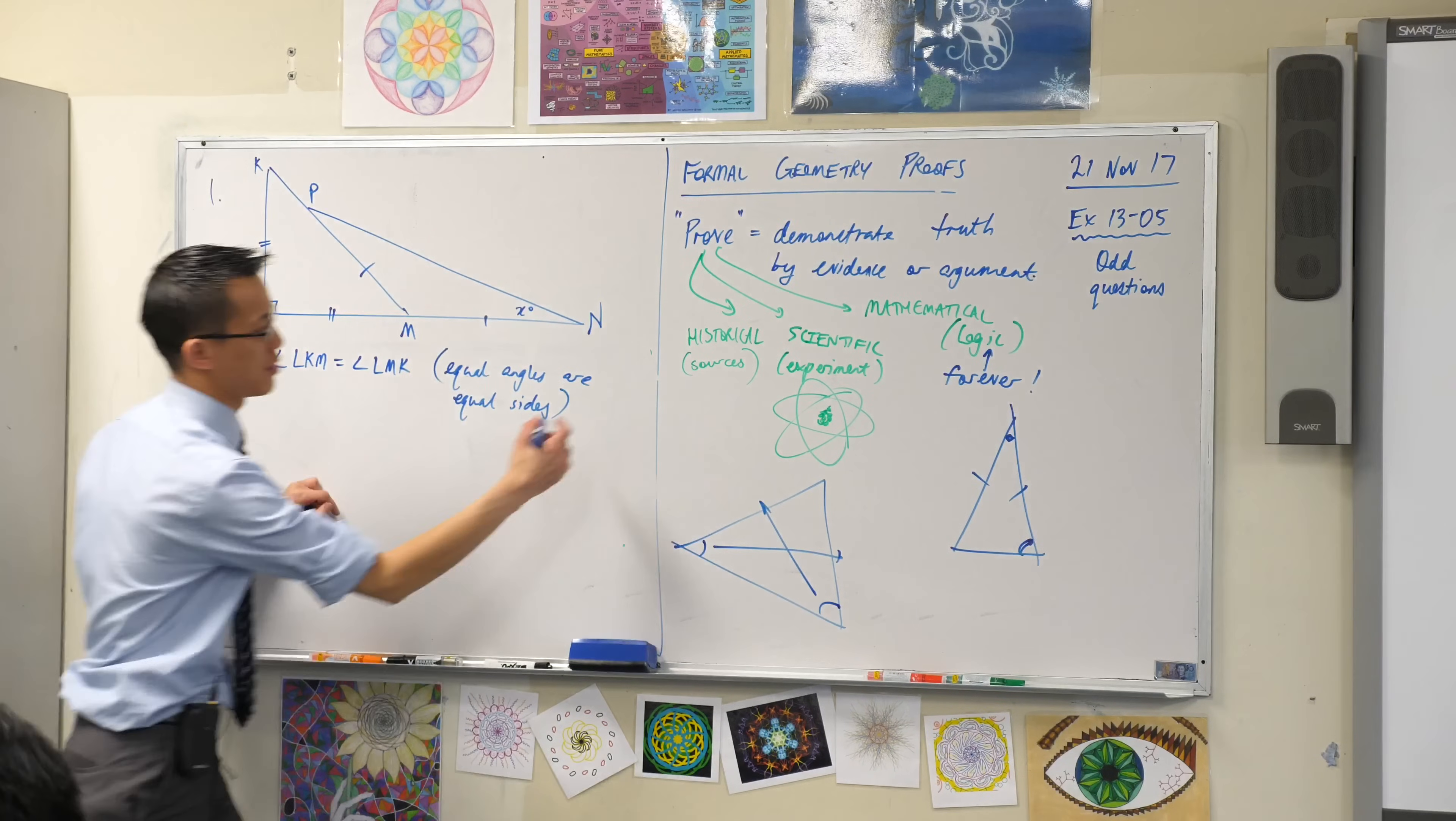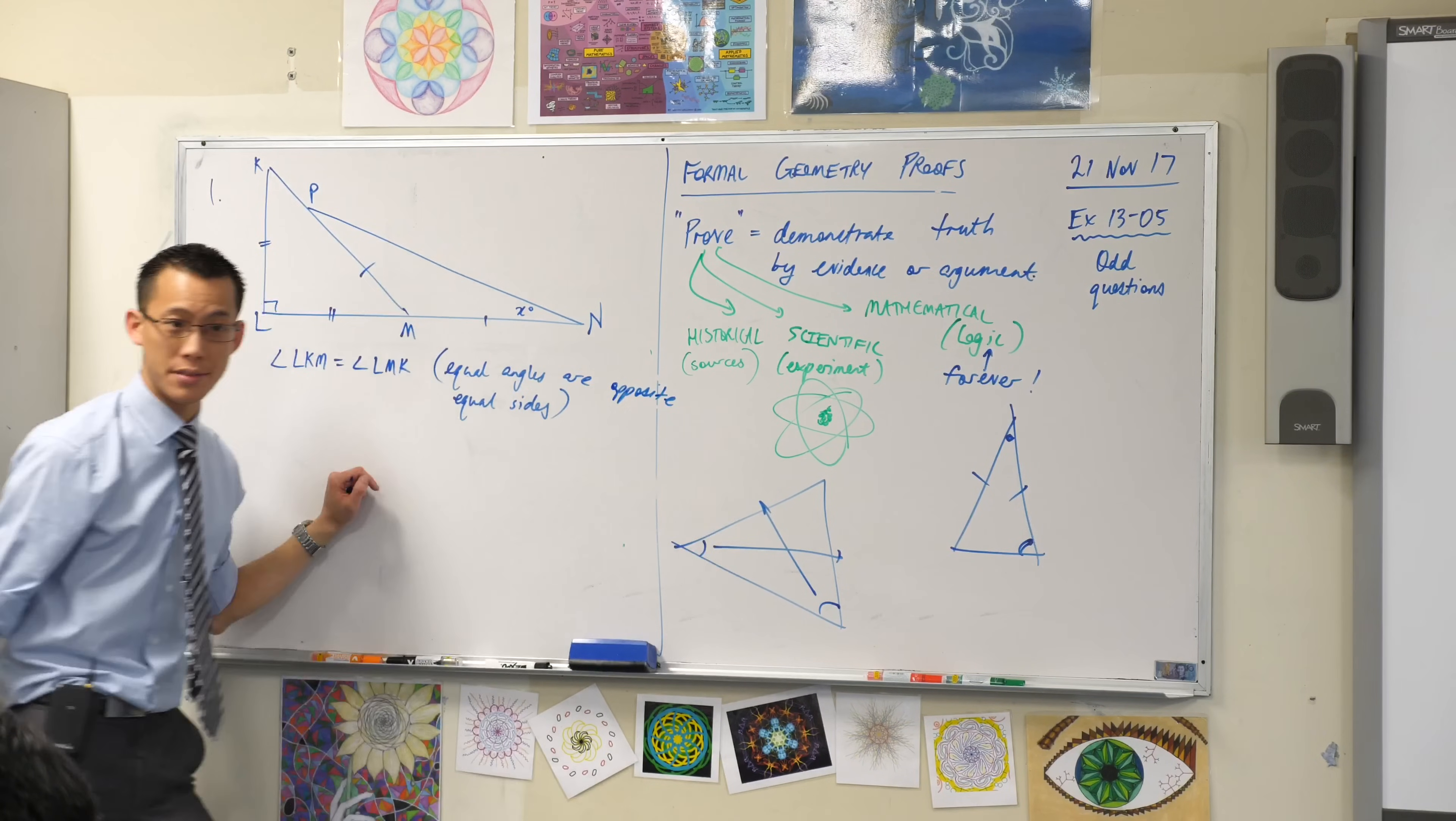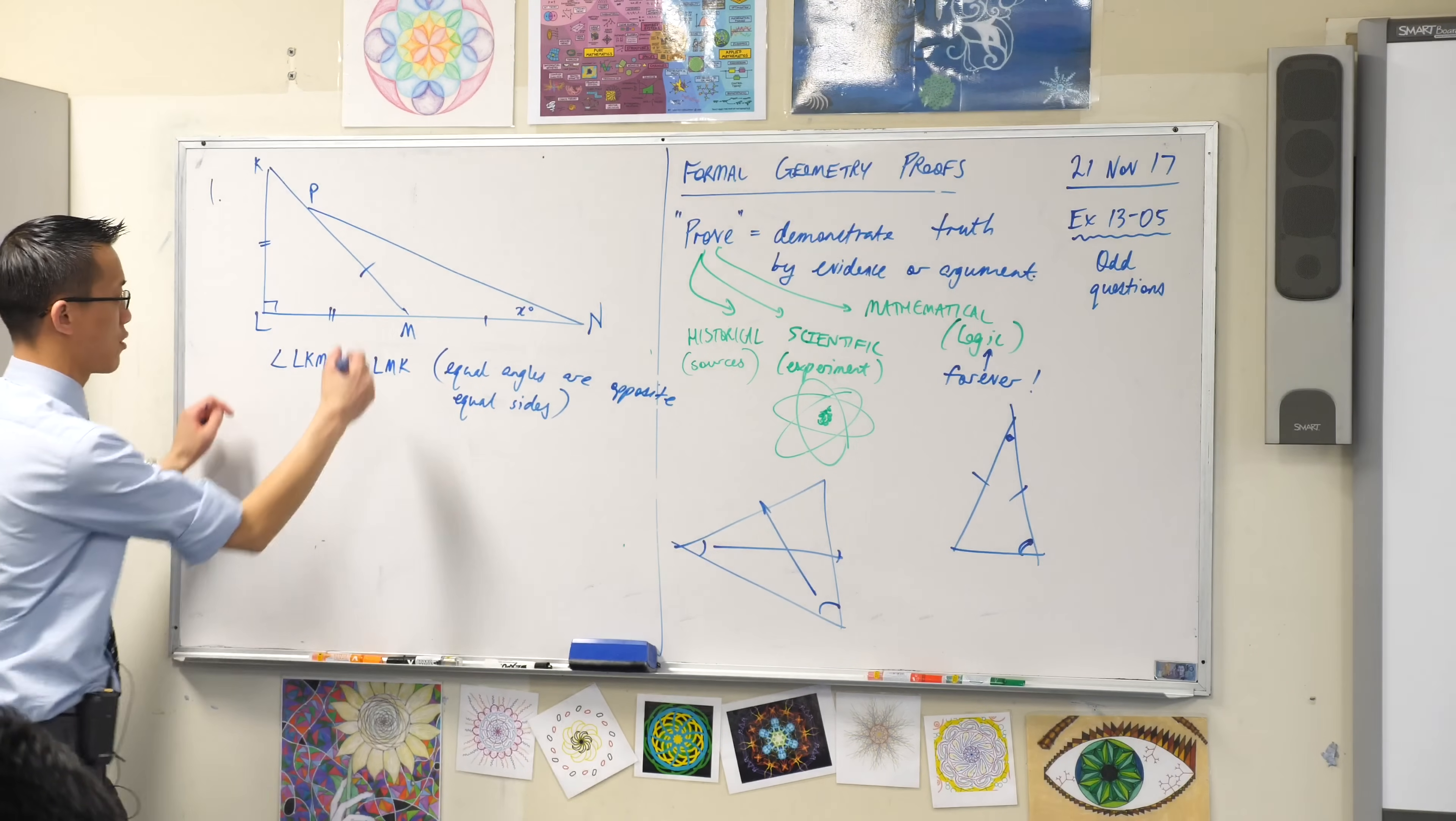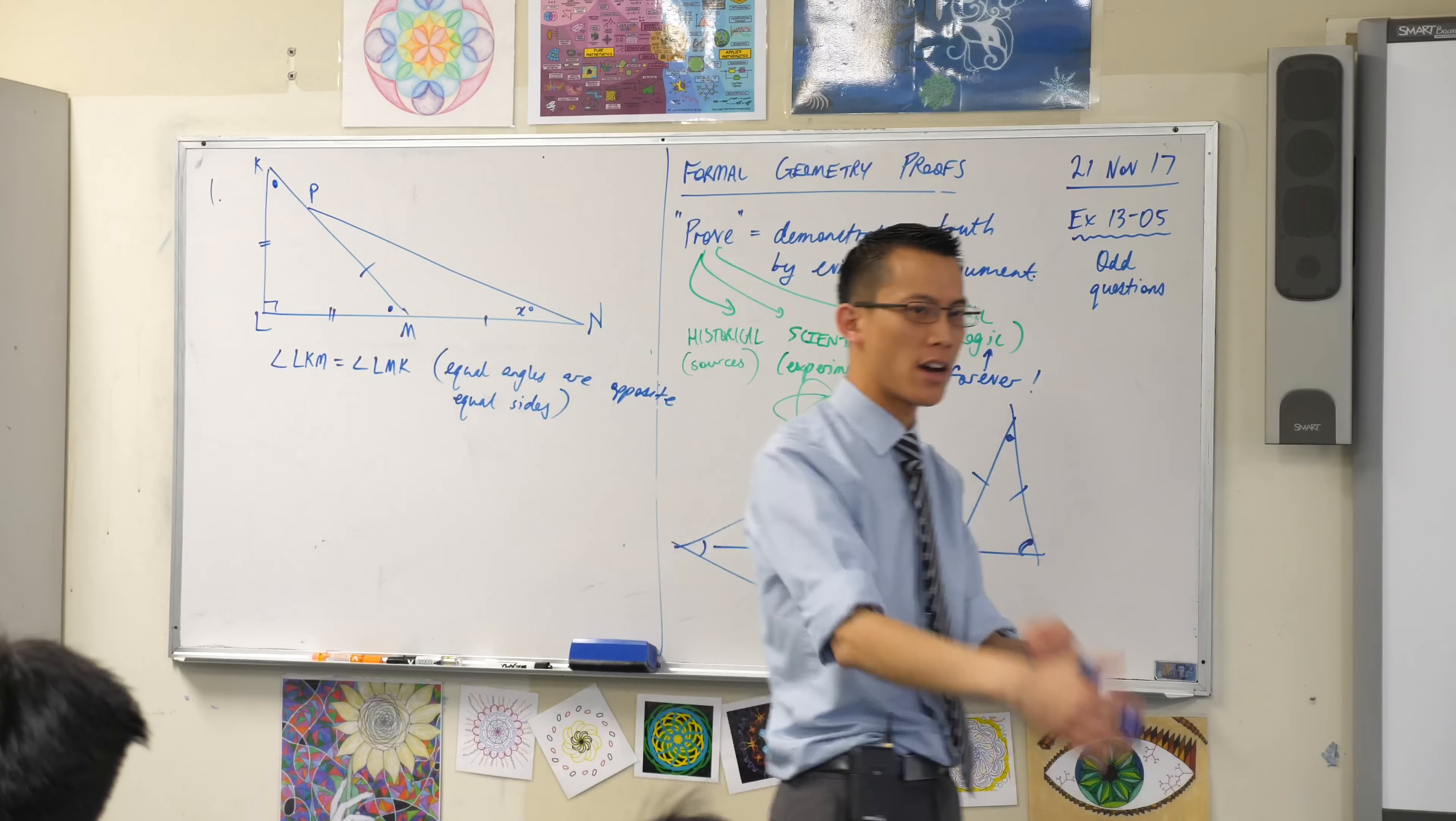Equal angles are opposite—sorry, I missed a word. That's better. Equal sides. Okay, they oppose, they face each other. That's good. What can I do with this? Because now I know these are equal, I'll mark them as such. But how can I use that to further my argument?